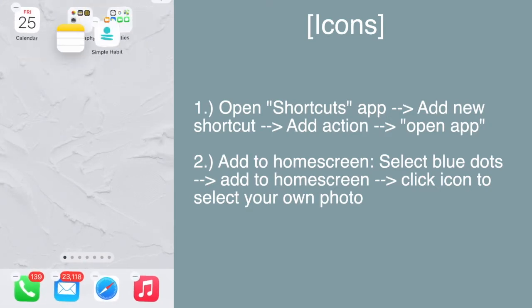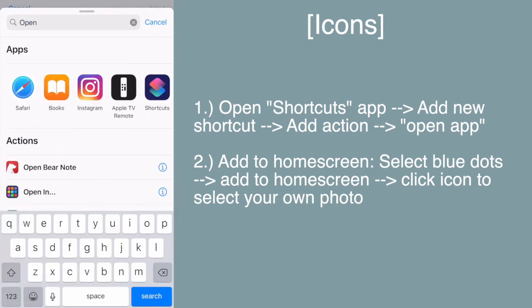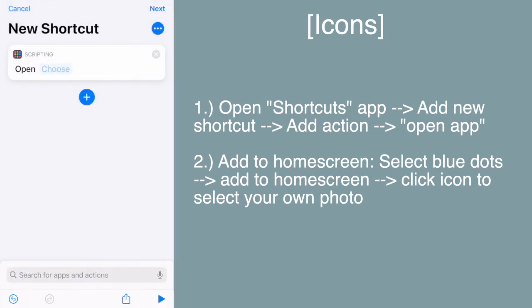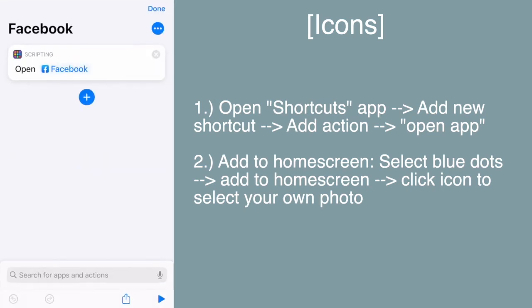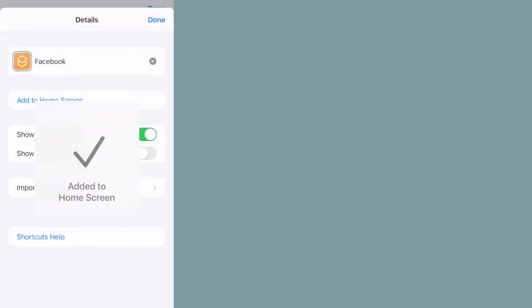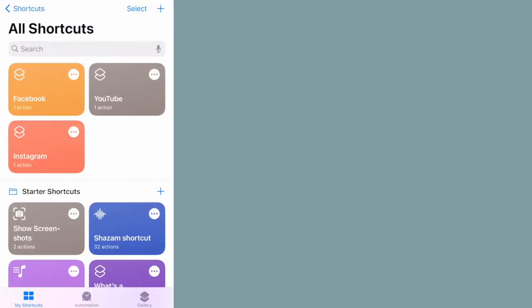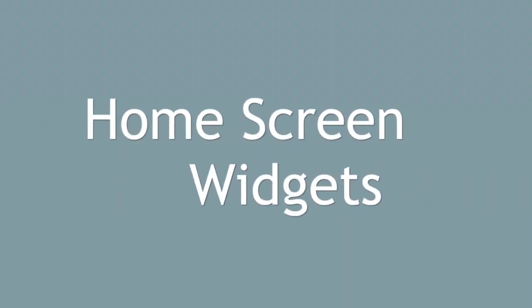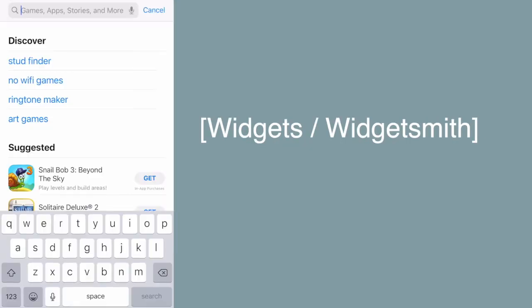To set up the custom icons, first clear your home screen of unwanted apps. Then open the Shortcuts app, hit the plus sign to add a new shortcut, tap 'Add Action,' then 'Open App,' and choose the app you want it to open. Name the shortcut, then tap the blue dots and select 'Add to Home Screen.' Tap the icon image to select the custom photo you created, hit Done, and it adds to your home screen. Repeat this for all your apps.